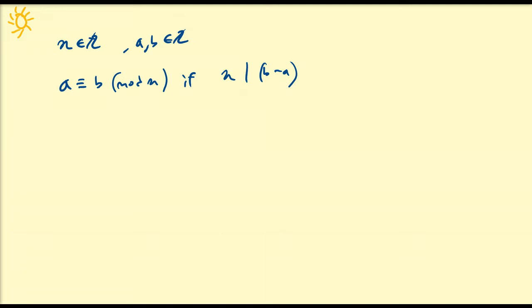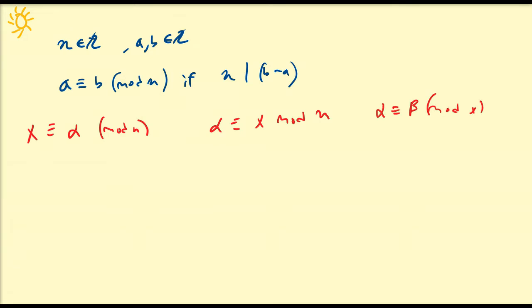So in this video, we're going to be considering some basic equations associated to congruences, namely ones of the form: x is congruent to alpha modulo n, alpha is congruent to x modulo n, and alpha is congruent to b modulo x. We'll consider these three types of equations and discuss how to solve each of them in their appropriate context.